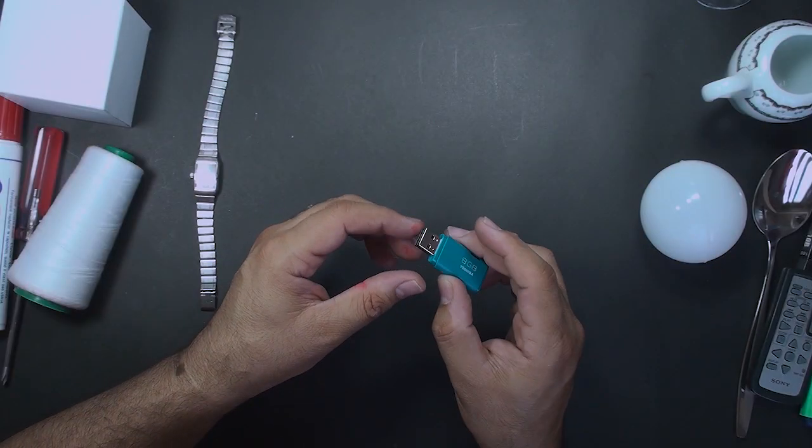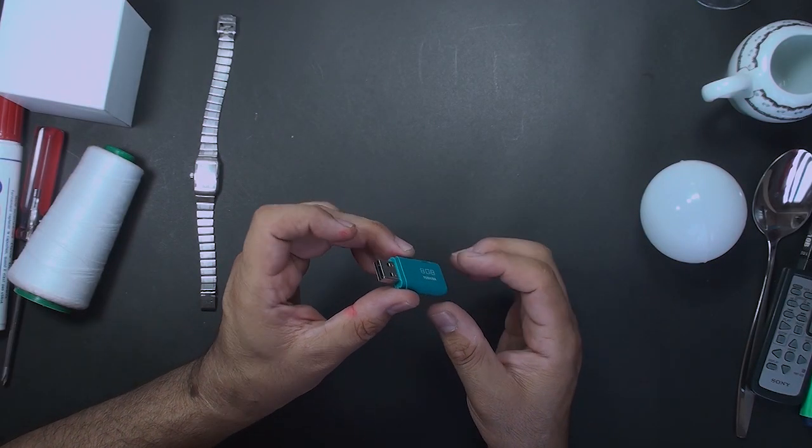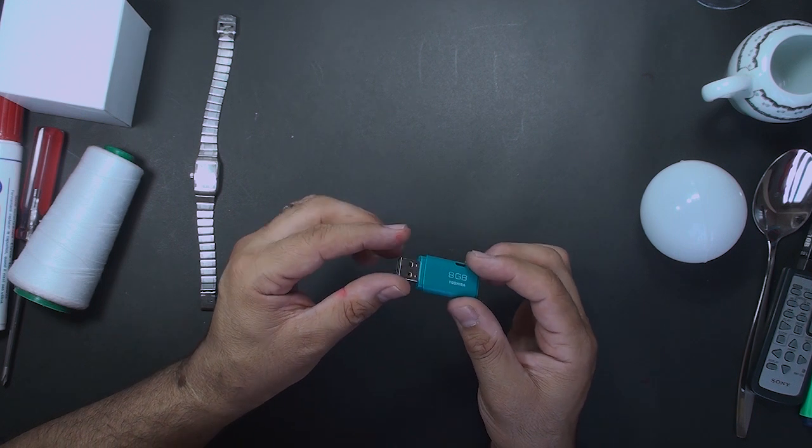The next object is a flash memory that's made of two smaller cubes that are stuck together.